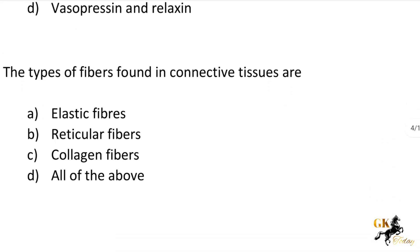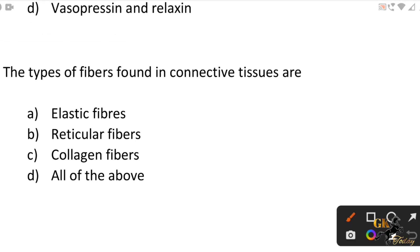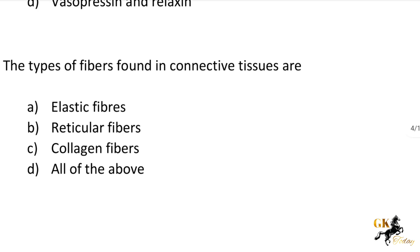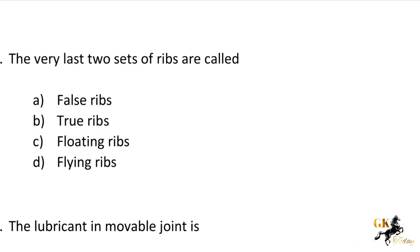Next question: The types of fibers found in connective tissues are — Options: Elastic fibers, Reticular fibers, Collagen fibers, All of the above. The correct answer is Option D: All of the above — elastic fibers, reticular fibers, and collagen fibers.